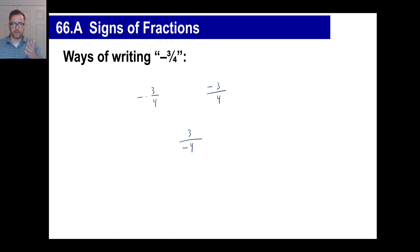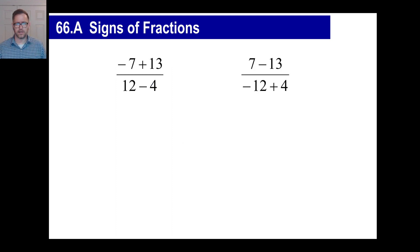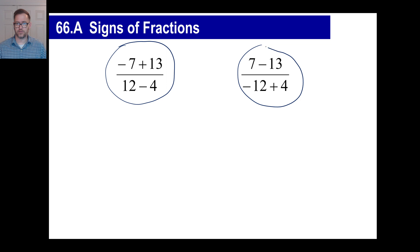Knowing that, we're going to use that to add together fractions that have kind of the same-looking denominators, but kind of not. Look at these two fractions — every single term in the first fraction, when you look at the second, every single sign is different. Negative seven becomes positive, plus 13 becomes minus, 12 becomes negative 12, negative four becomes positive four.